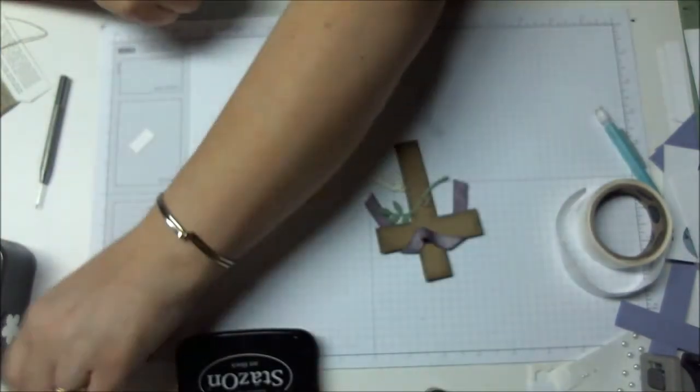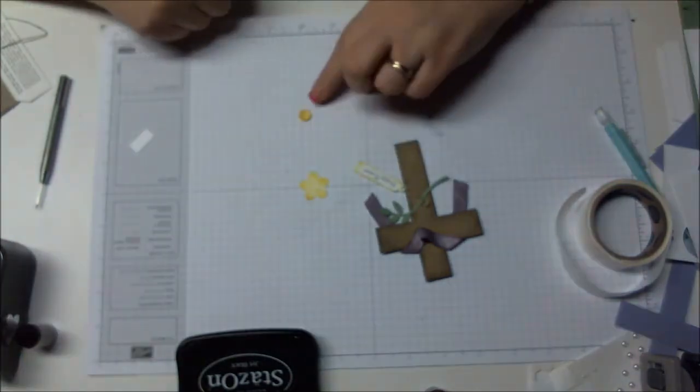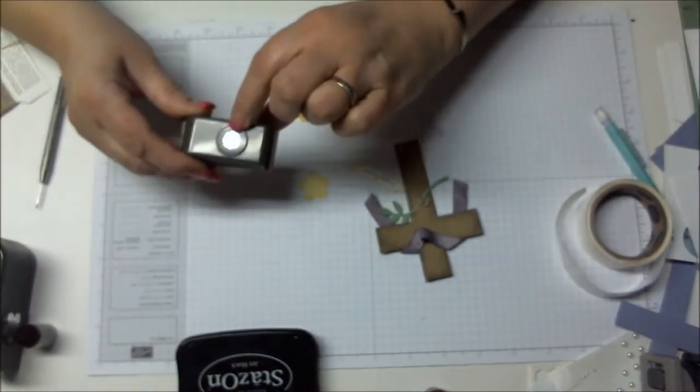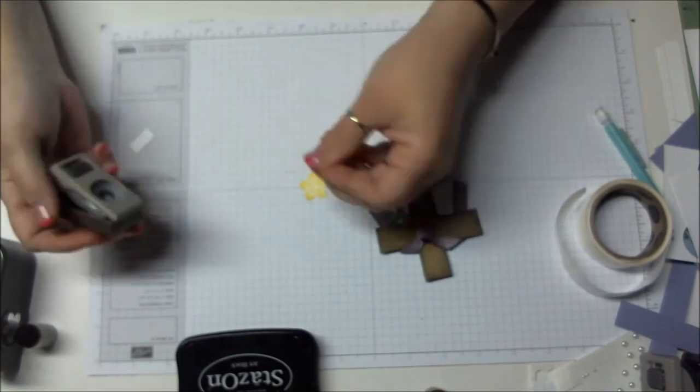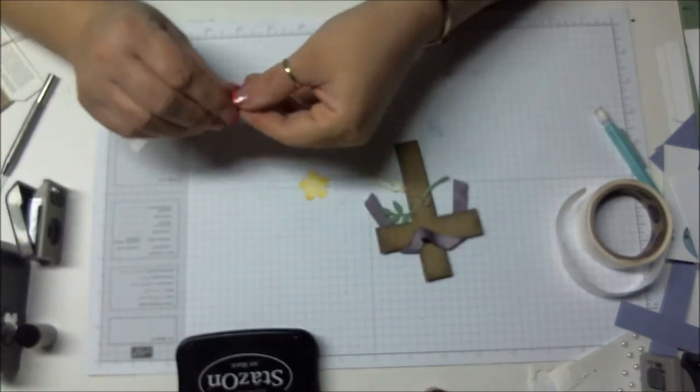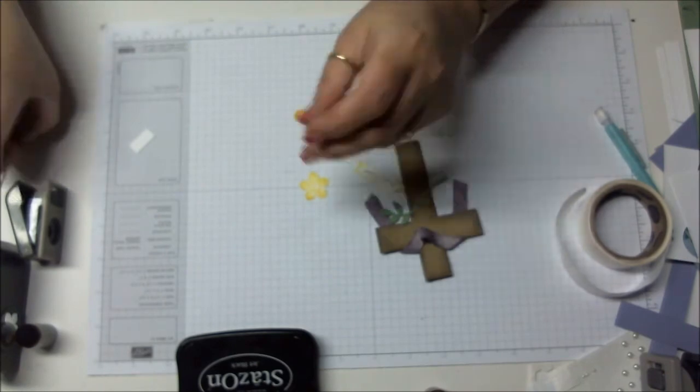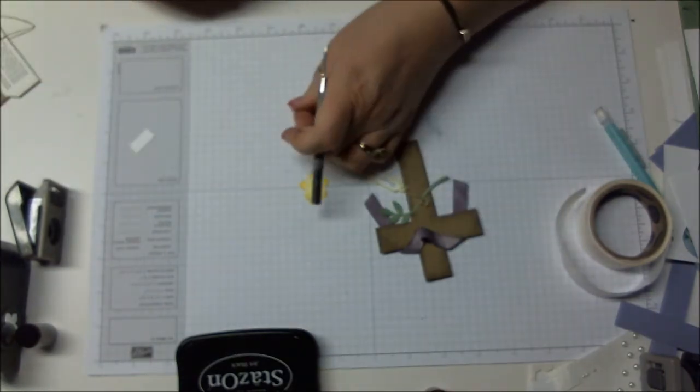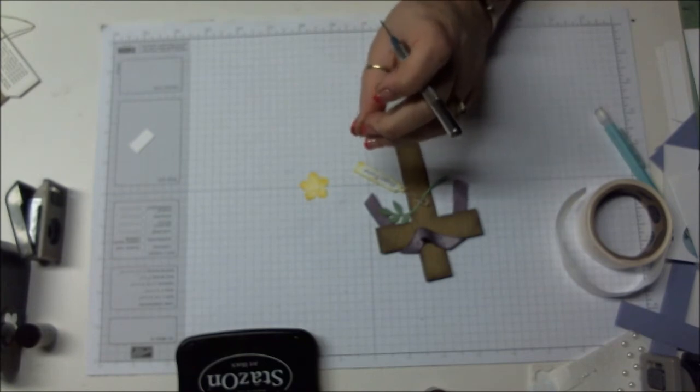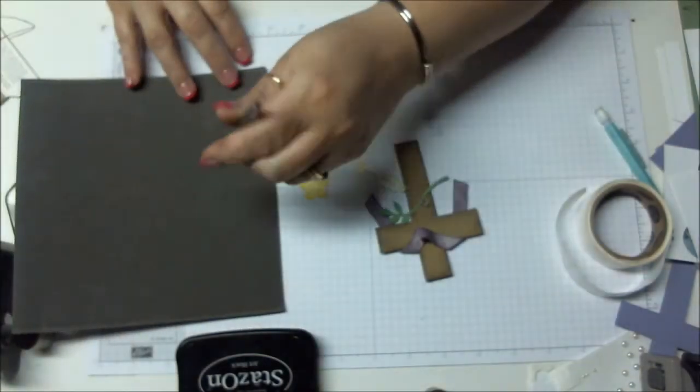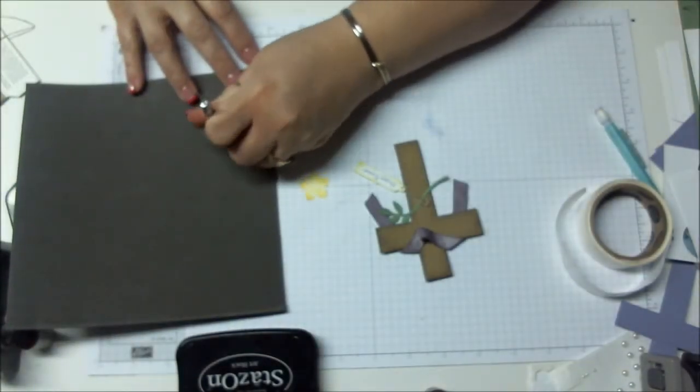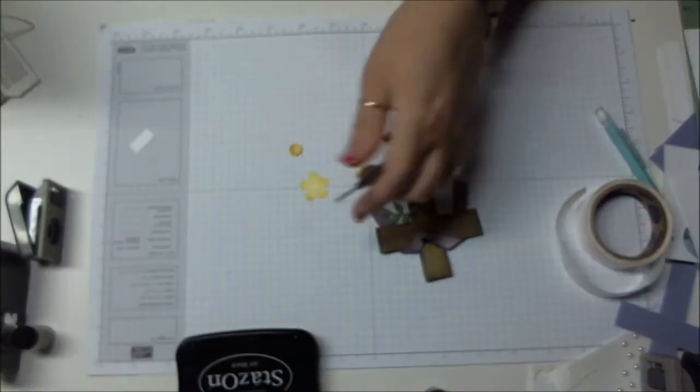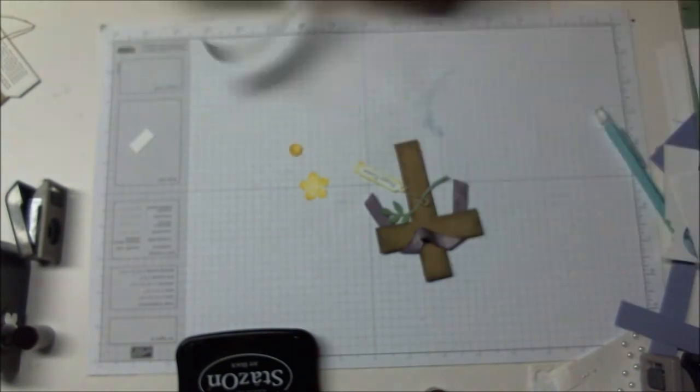Then I sponged that. Then you want to take, I took another one from the Itty Bitty punches. There's this little flower and I just punched out a flower. I took the end of this and I pushed it down on a soft foam mat like this, and I just kept going around until it kind of formed up a little bit.